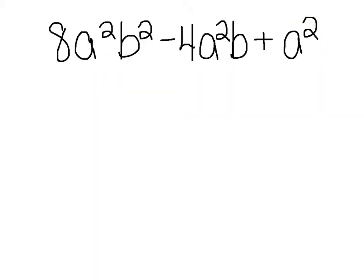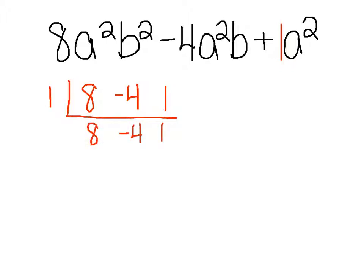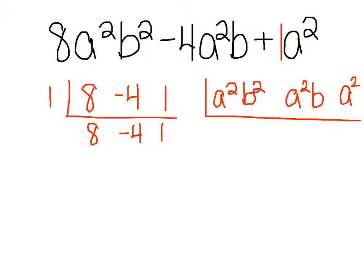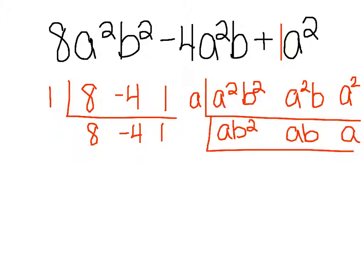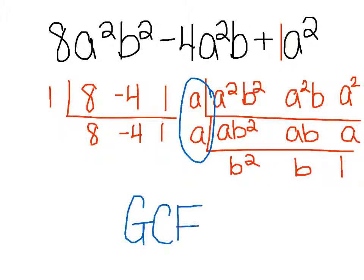We have three terms with no number on the third, so 1 is implied — giving us 8, negative 4, and 1. Since 1 is in the list, the GCF of the numbers is 1. For the variables a squared b, a squared b, and a squared — there's an a in all three, so we divide by a, leaving a, b squared; a, b; and a. We take out a again — the GCF for variables is a times a, which is a squared. So the GCF is a squared.